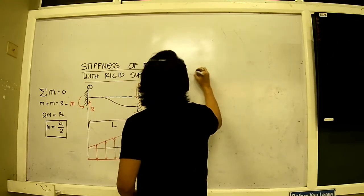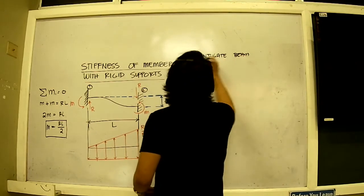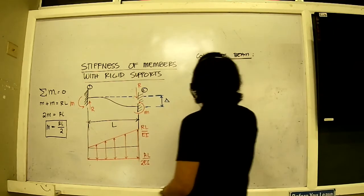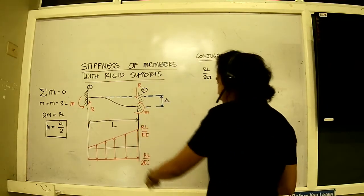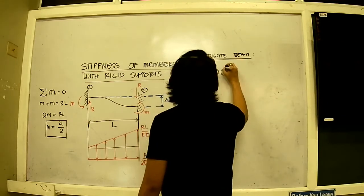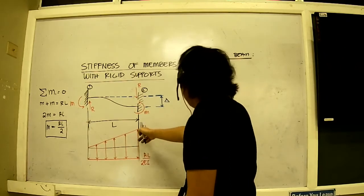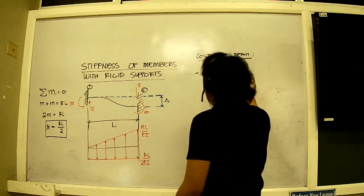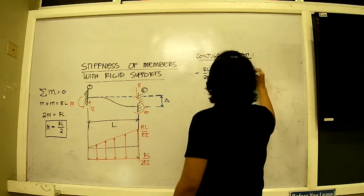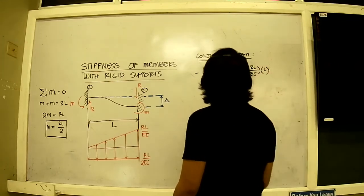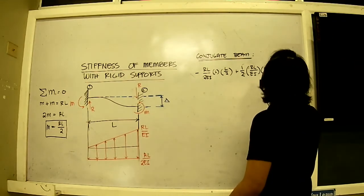For the conjugate beam, we have RL divided by 2EI. So area times L times L over 2. I'll just, this is negative, I can set whatever I want. And then plus RL, that is the opposite. Oh, the area of that. This is triangular. So one-half of height times base. Times moment arm, which is L over 3. That should be all equal to delta.